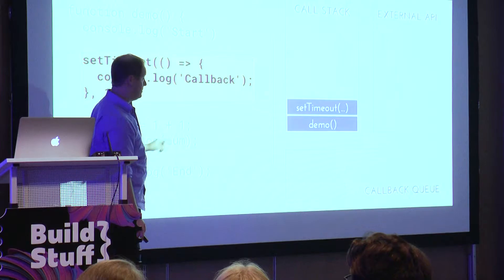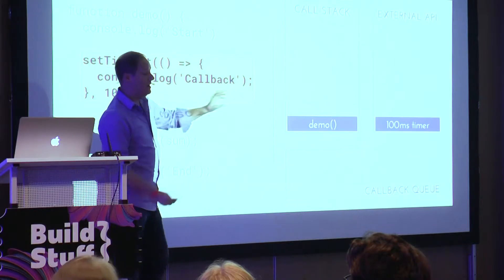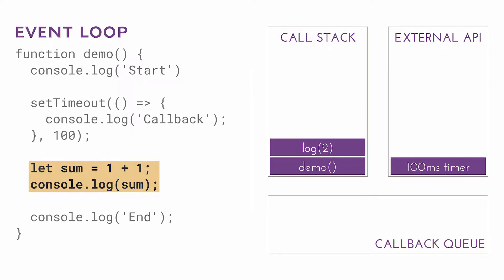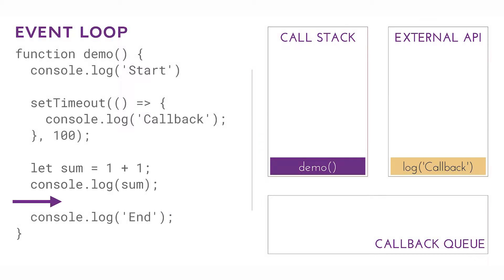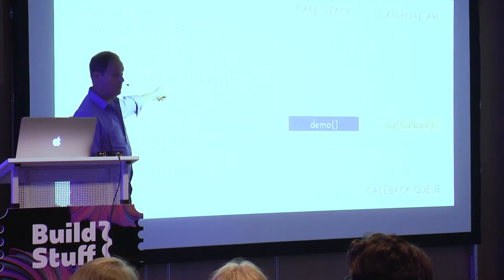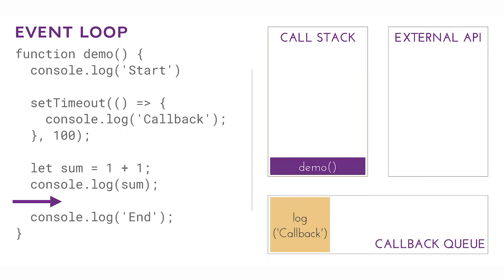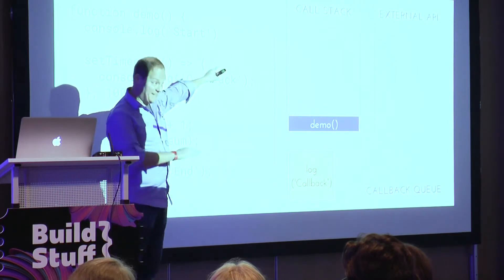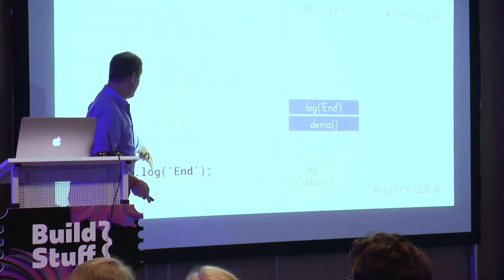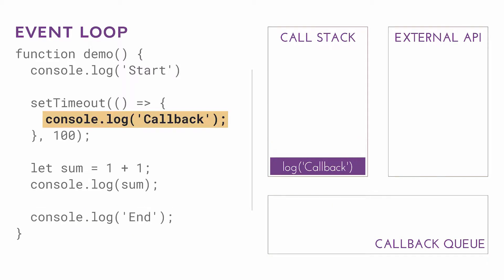We say console.log start, then we call setTimeout which sets a 100-millisecond timer in the external API — basically a scheduler. We say sit over there for a while and we keep going. We do more work, add our numbers and log the result. Somewhere in between, the timer fires — the oven's preheated — but the callback gets put on the queue. The way the event loop works, nothing comes off that queue until the call stack is empty. So we have to log end first, and only then do we look at the callback queue and run that.